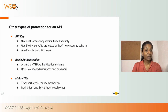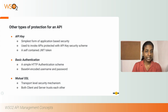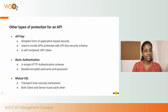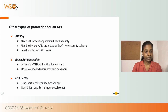In WSO2 API Manager, not only OAuth2, there are also other types of protection that can be enforced for an API. API key is the simplest form of application-based security you can configure for an API. An API key can be generated from the WSO2 API Manager developer portal for a particular client application, which can then use it to invoke the API secured with the API key security scheme. An API key is a self-contained JWT token generated without communicating with the key manager. Basic authentication is a simple HTTP authentication scheme where a valid base64 encoded username and password are sent in the request through the authorization header. Mutual SSL is a transport-level security mechanism where both the client and the server validate and trust each other, avoiding any illegitimate requests as long as the server is aware of the certificates belonging to the client.